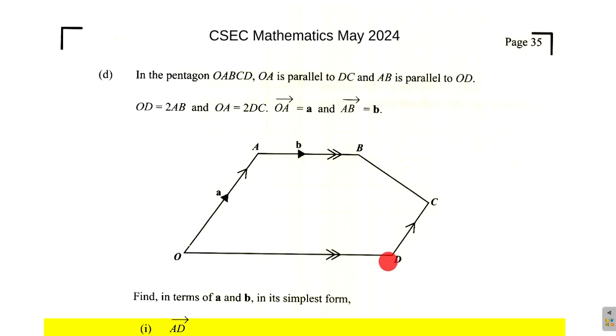OD is two times AB, and OA is two DC. You can name the vector using two letters with the arrow above them, or you can give it one letter. The two letters with the arrow above them would have to be uppercase, but if you give them a name with one letter, it would need to be lowercase and bold. They say OA is a and AB is b.